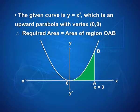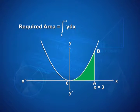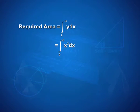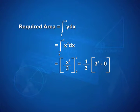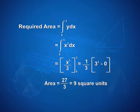Now look at the solution to the second question. The given curve is y = x², which is an upward parabola with the vertex at the origin (0, 0). The required area equals the area of region OAB, where x = 3. The required area equals the integral from 0 to 3 of y dx, which equals the integral from 0 to 3 of x² dx. On integrating, we have x³/3 with limits 0 and 3. Applying limits gives (1/3) × (3³ − 0) = 27/3 = 9 square units.